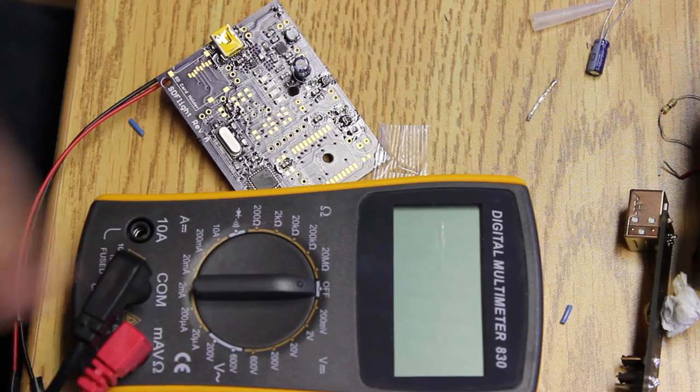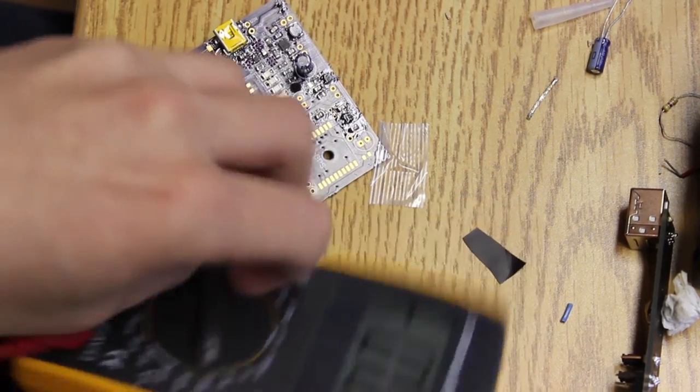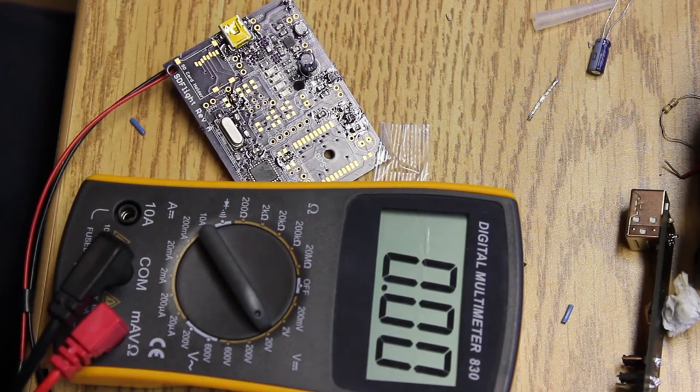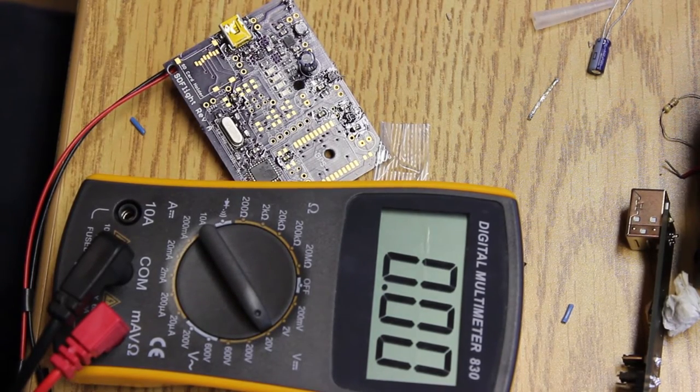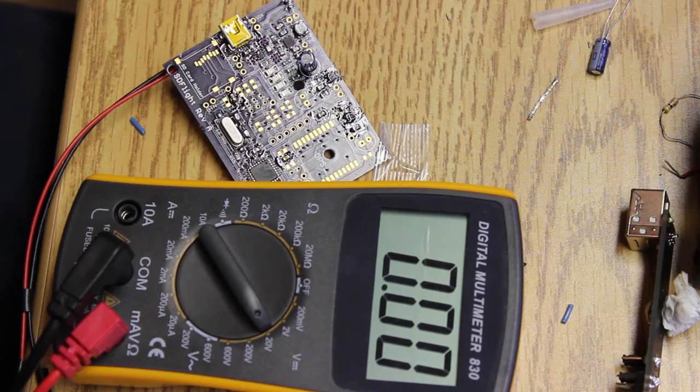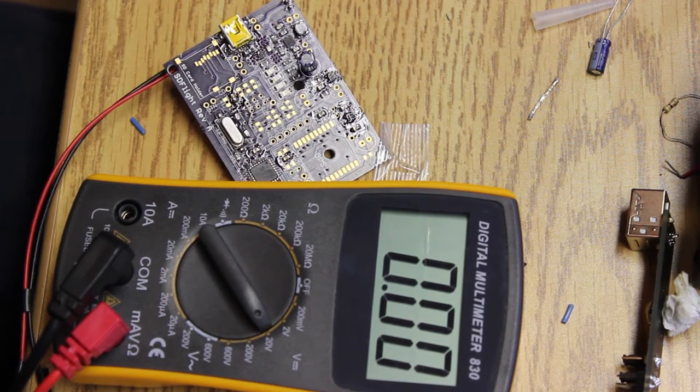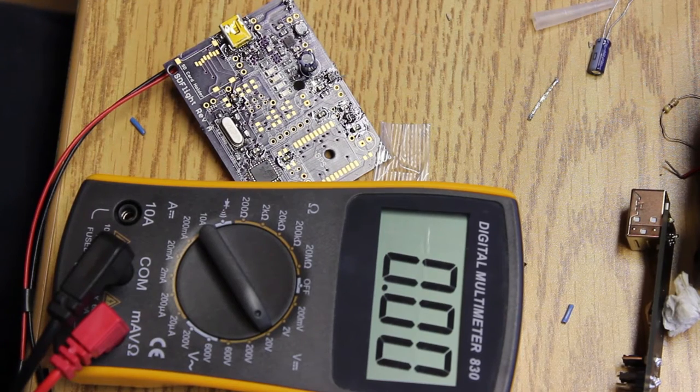I gave it a 4.7 microfarad capacitor. So I can show you here what the result of that is, what it does with that kind of capacitance. Basically, I don't know 100% how it works, but from what I understand, it has like an internal filter that decides what the output voltage is going to be.